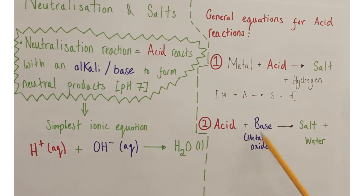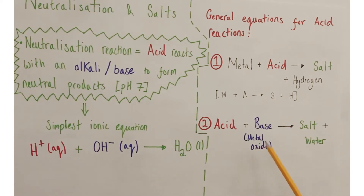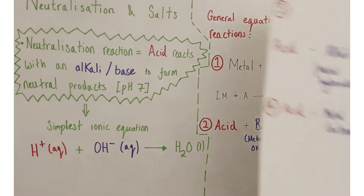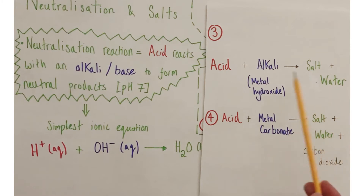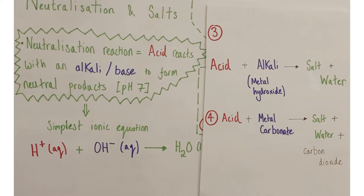The second general equation: acid reacts with a base to form a salt and water. The most common bases you'll encounter are metal oxides, which are insoluble and classified as bases. The third reaction: acids reacting with alkalis to form salt and water — similar in style to the base reaction, but alkalis are soluble and are most commonly metal hydroxides, such as sodium hydroxide or potassium hydroxide.